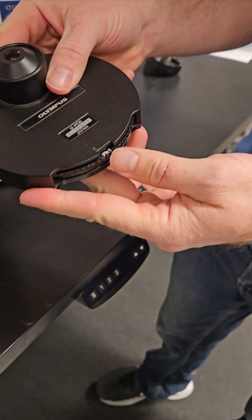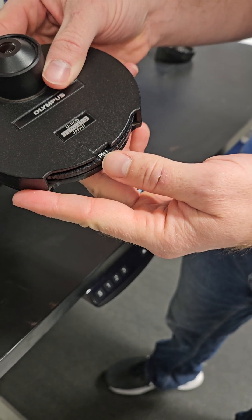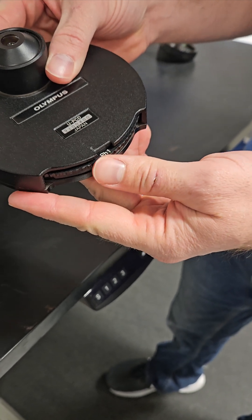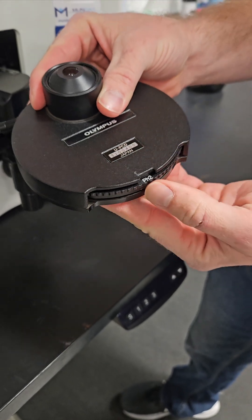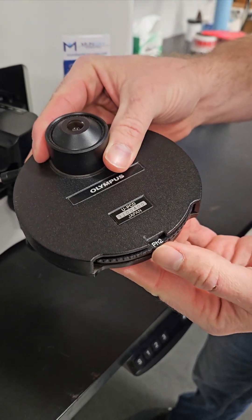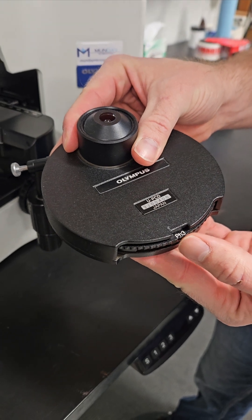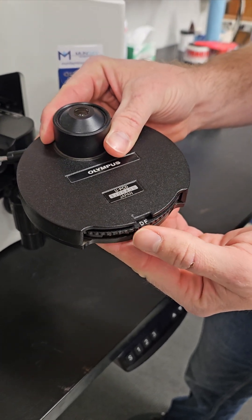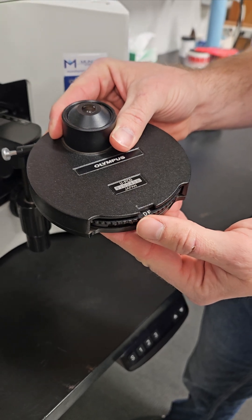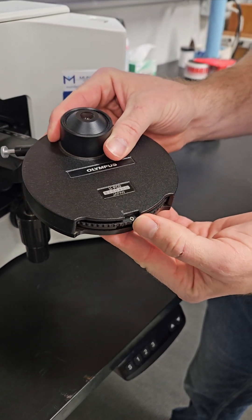So remember that PH1? This PH1 right here is going to have to be in on the 10 and 20 to match the phase rings and produce a phase contrast image. PH2 is going to have to be in on the 40X. PH3 is going to have to be on the 100X. This condenser has a dark field stop, which we're not going to talk about in this video, but we'll talk about in a later video. And then the circle is the bright field image.